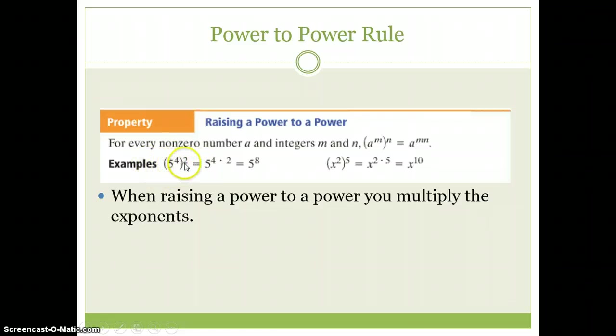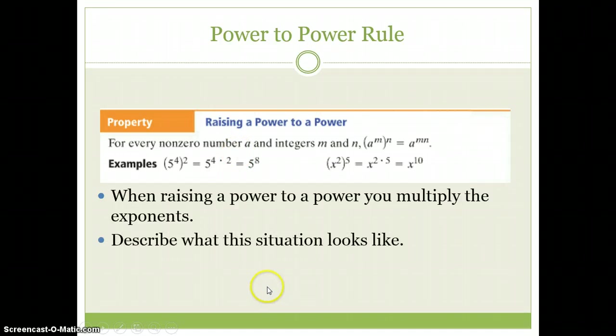Remember, when these two guys are right next to each other like this, it's a power to power and we multiply. Here's another example, a to the m to the nth is a to the m times n. Look at this orange box, it's on page 447 if you want to see it at home anytime.